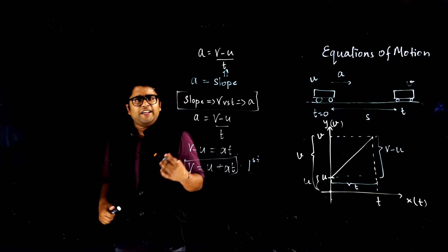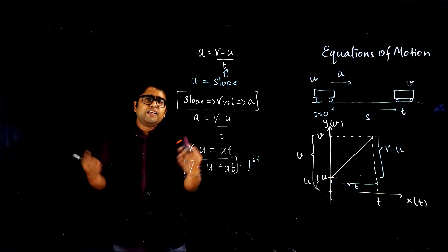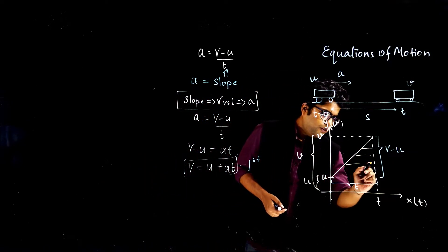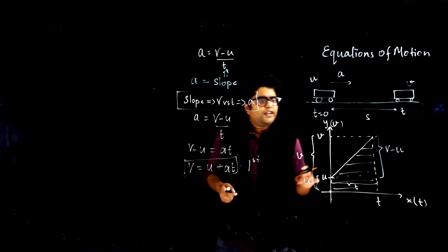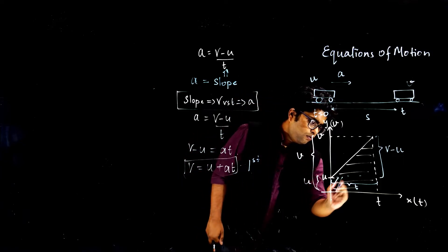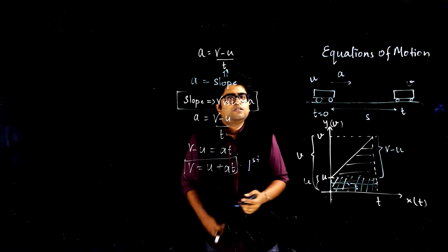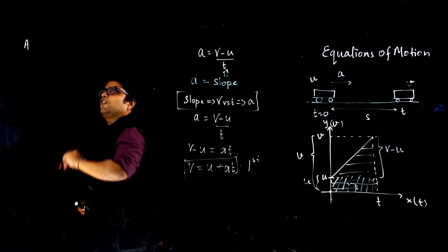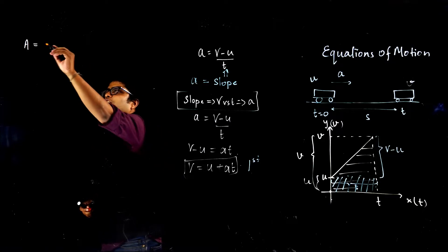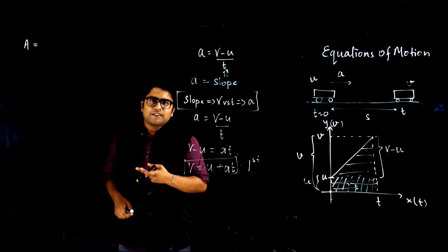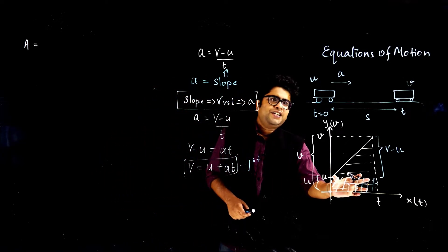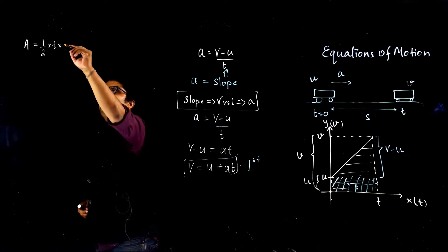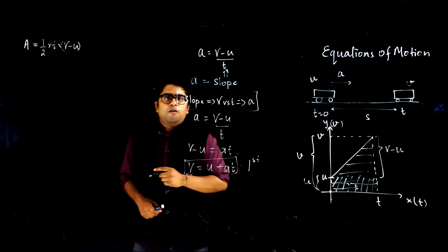Now, instead of finding the slope, I'm interested in finding the area under the curve. The area under the curve has two parts: one part is a rectangle and the other is a triangle. The area of the triangle is half base times height, which is half times t times (v − u).